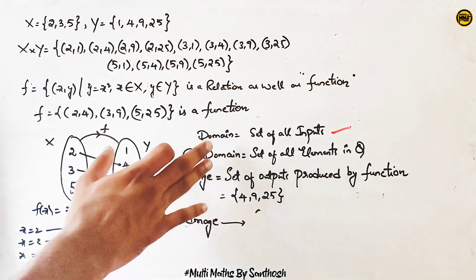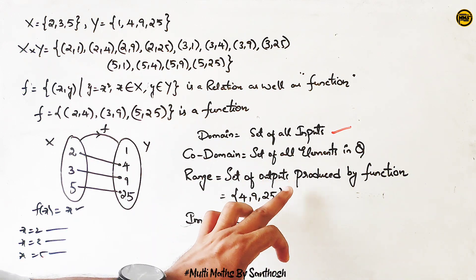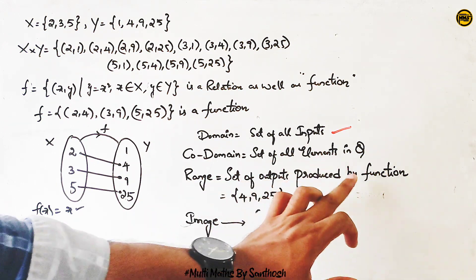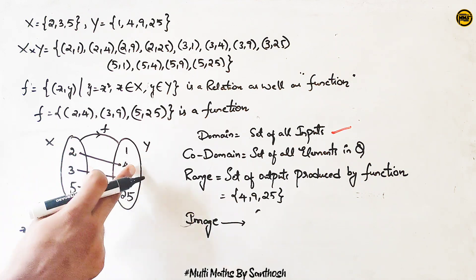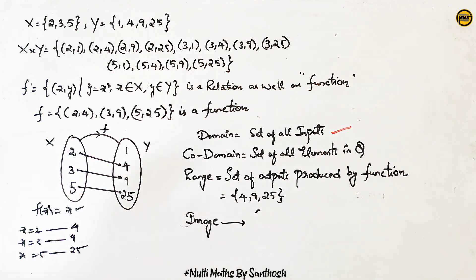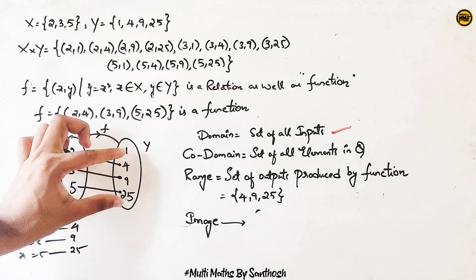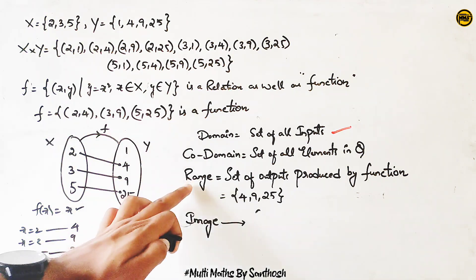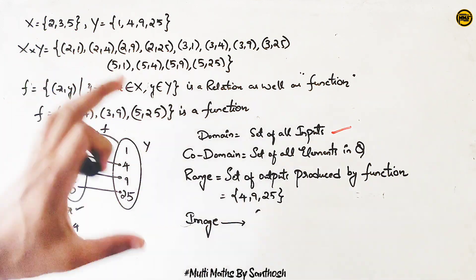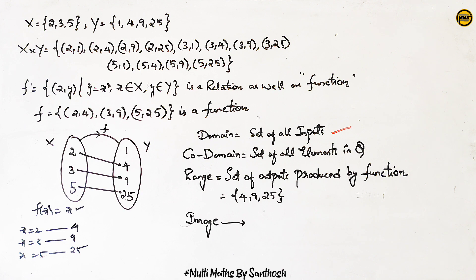Now let's start with the range. Range is the set of outputs produced by a function. If the inputs are x = 2, 3, 5, the outputs produced are 4, 9, 25. The outputs produced make up the range. So range is equal to the set {4, 9, 25}.